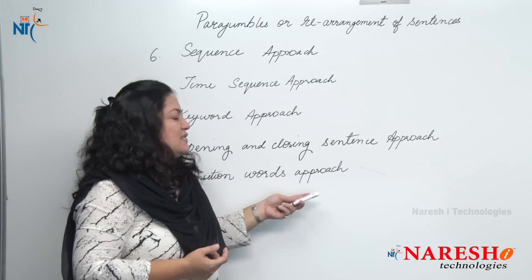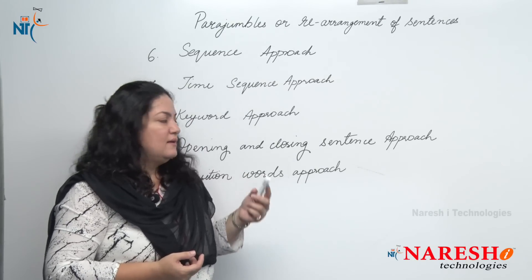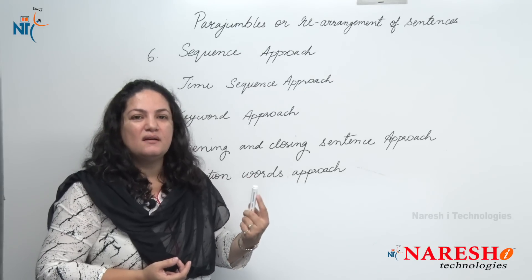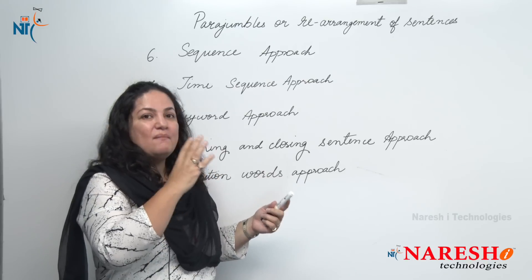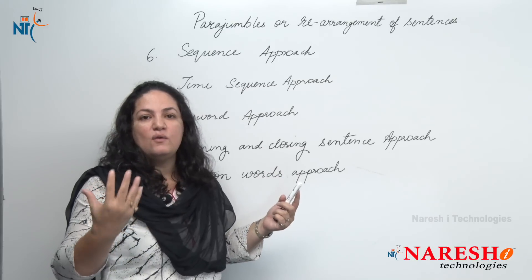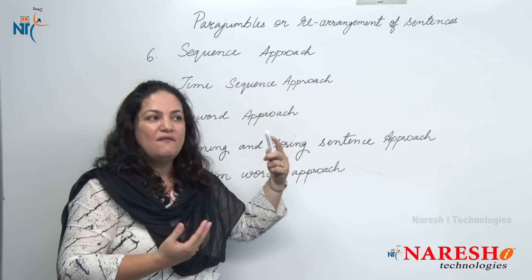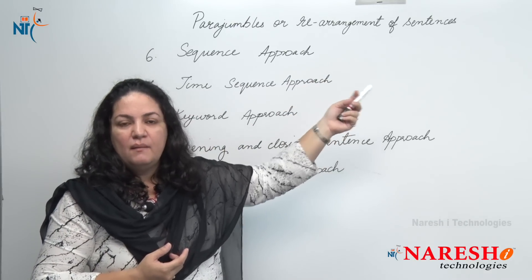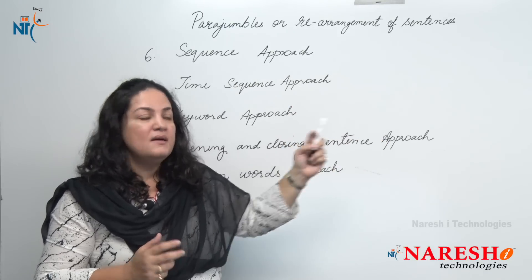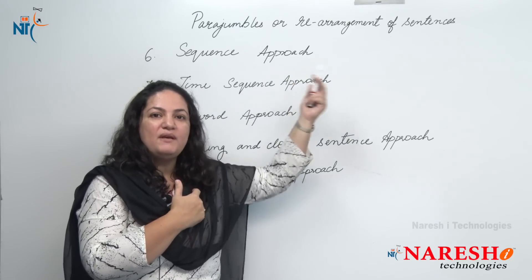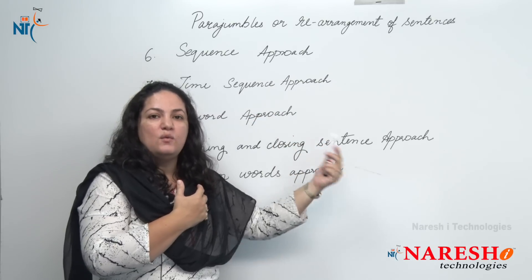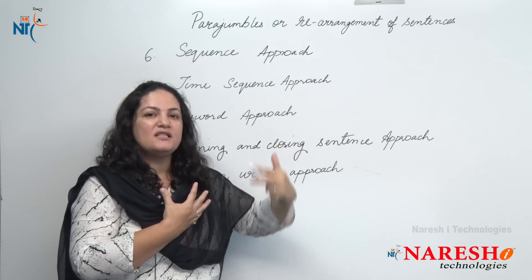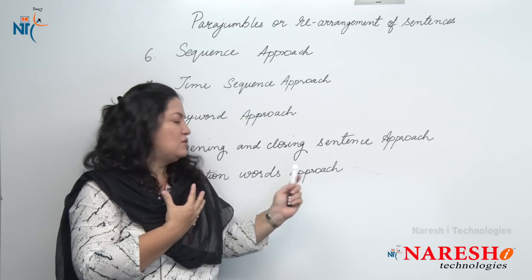The next approach is the transition words approach. Transition words include but, if, then, only. These signal that some change is happening. You cannot have these in the first part of sentences and then give the reason. For example: 'I have to go to work today, but it's raining heavily, I may not go.' The sentence 'but it's raining heavily, I may not go' would not be first, because it's giving the reason. Transition words usually follow a previous statement and provide justification for why something is happening.